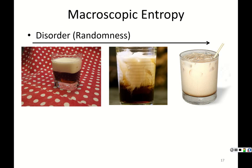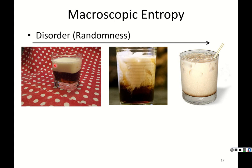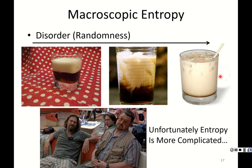At the macroscopic scale, one example of entropy is mixing a drink like a white Russian. If you have Kahlúa and vodka on the bottom with cream on top, those two phases will eventually mix by themselves without any energy input from outside — you could stir it to speed things up, but they will mix spontaneously. You can think of this as entropy increasing over time: you get more disorder and more dispersion of energy. However, entropy is a little more complicated than this macroscopic picture.